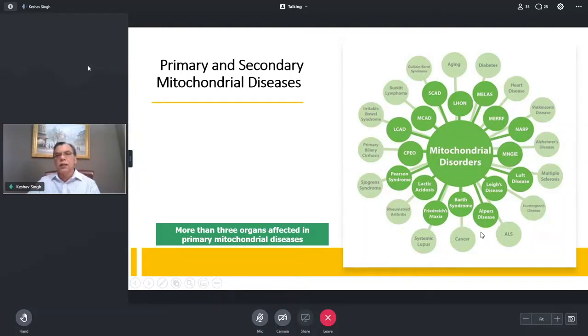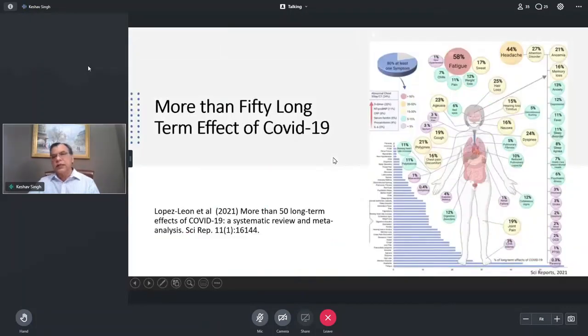So what turned out to be recently this paper by Lopez-Leon just a couple of weeks ago they identified more than 50 long-term effects of COVID-19 and if you look at the top of that 58% people experience fatigue and mitochondria is involved in the chronic fatigue. If you don't have energy, you don't do well, you are tired. So this is something we are keeping an eye on it and trying to figure out what we can do in terms of reversal of this phenotype.